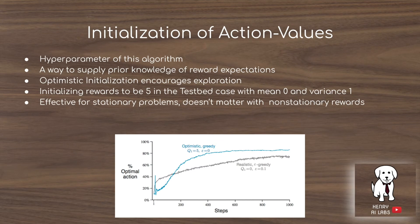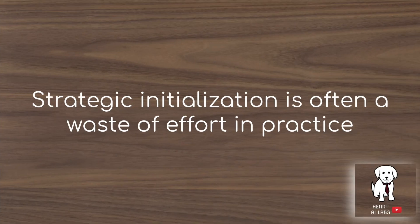The initialization of action values is another interesting hyperparameter. Using an optimistic initialization — for example, initializing all button values to 5 even though true rewards average around 0 — encourages the greedy algorithm to explore all actions, since it becomes disappointed with observed results. However, optimistic initialization is often a waste of effort in practice because most real problems have non-stationary reward distributions, making initial behavior less relevant.